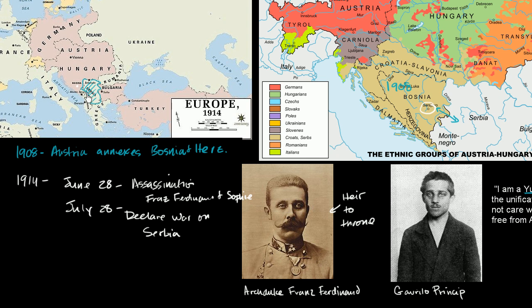At this point, Serbia was a relatively small state but was very closely aligned with the Russian Empire. The Austrians figured the Russians wouldn't try to get into a war over this — they exercised bad judgment there, because the Russians were very closely aligned with the Serbians, had a lot of roots there, and wanted to maintain their influence in the region. And so Russia began to mobilize troops to help defend Serbia.